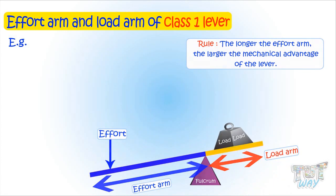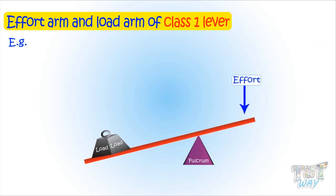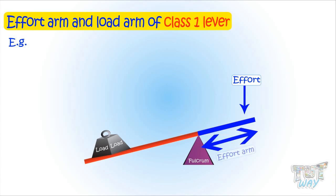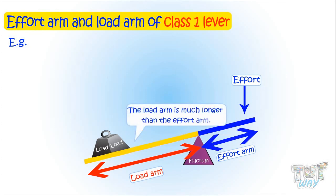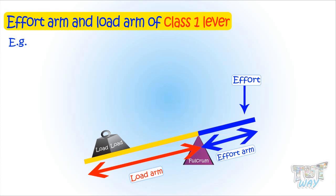Here is one more example — another class 1 lever. The effort arm is the distance between the fulcrum and effort, so this much is its effort arm. The load arm is the distance between the load and the fulcrum, so this much is its load arm. You can clearly see that the load arm is bigger than the effort arm, so according to the rule, it will not give any mechanical advantage. Rather, it will be more difficult to lift the load here.